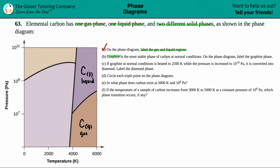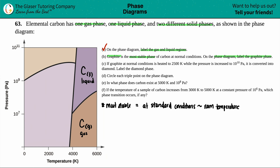Letter b: graphite is the most stable phase of carbon at normal conditions — label the graphite phase. 'Most stable' means at standard conditions, which we can think of as roughly one atm and room temperature, around 25°C.